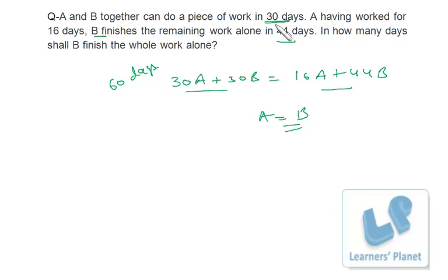So if together they are taking 30 days, that means individually they will be taking 60 days each. So B finishes the entire work alone in 60 days.